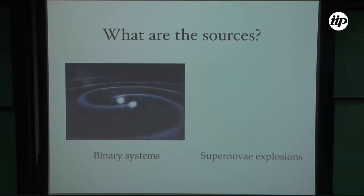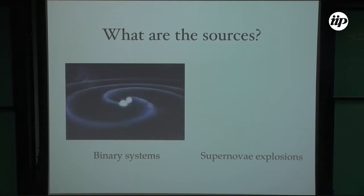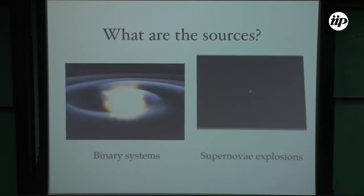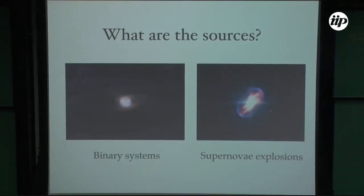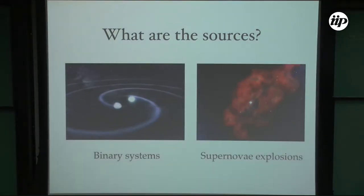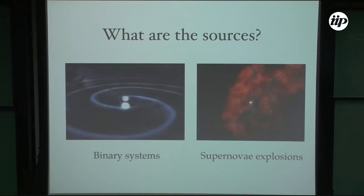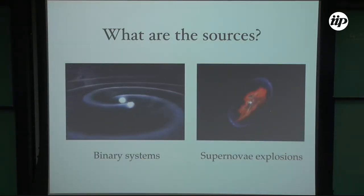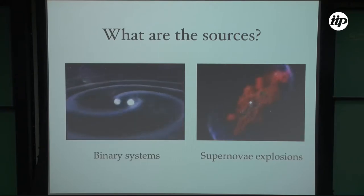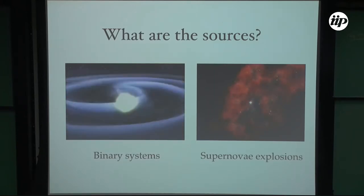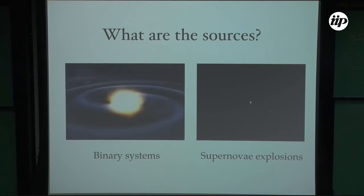I'm only going to talk about binary systems up to the Newtonian expansion, not touching on numerical relativity. The other sources are supernova explosions, which are treated like unmodeled bursts because we really don't have templates we can use for modeling these explosions. There are several techniques and methods you may have studied in data analysis, but from the point of view of the dynamics of gravitational wave emission in supernovae, I'm not going to say anything.